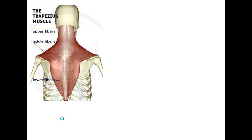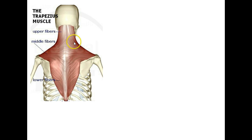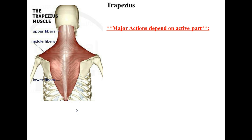Let's go ahead and get started with the trapezius. Initially, we had mentioned that the trapezius is a neck extender, and it was able to pull the head towards the back by using these upper fibers here — the cells that are in the upper section of the trapezius. What else we're going to see, as I mentioned last time when we talked about movers of the head, is that the trapezius has multiple grains.